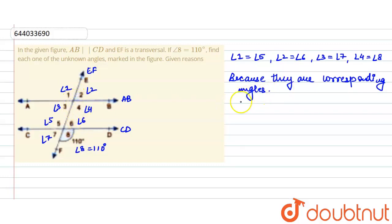Similarly, angle 1 is equal to angle 4, angle 2 is equal to angle 3, angle 5 is equal to angle 8, and angle 6 is equal to angle 7, because they are vertically opposite angles.